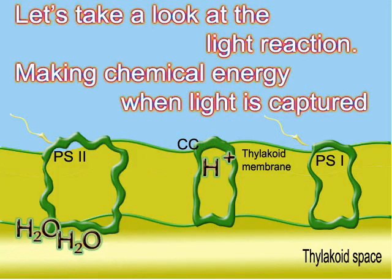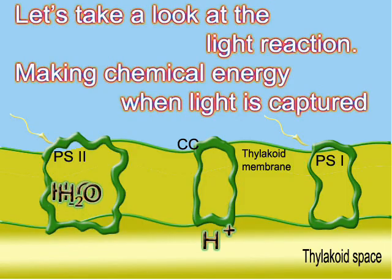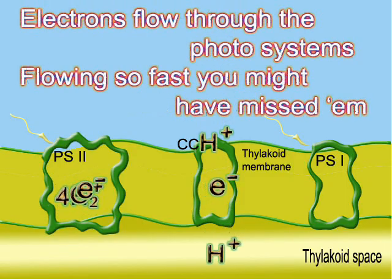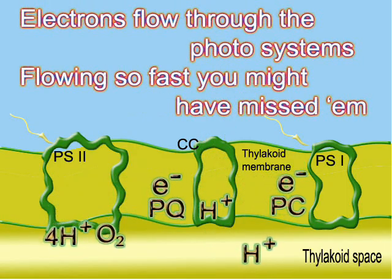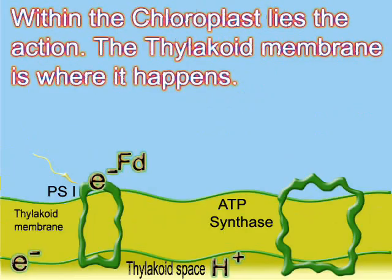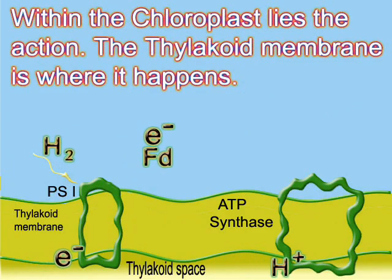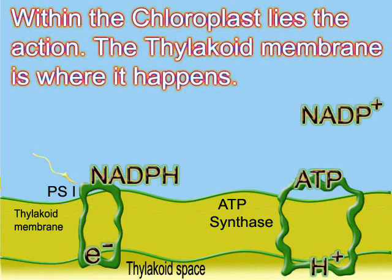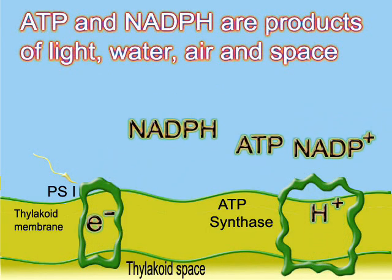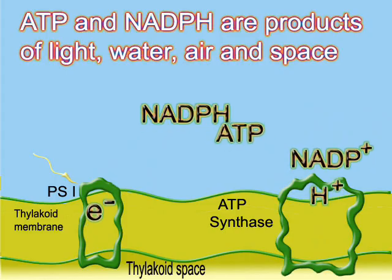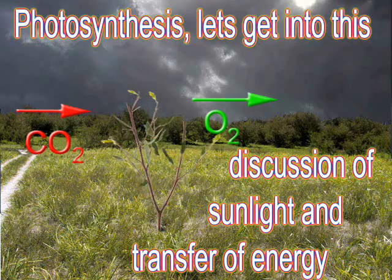Let's take a look at the light reaction, making chemical energy when light is captured. Electrons flow through the photosystems, flowing so fast you might have missed them. Within the chloroplast lies the action. The thylakoid membrane is where it happens. ATP and NADPH are products of light, water, air, and space. Photosynthesis.